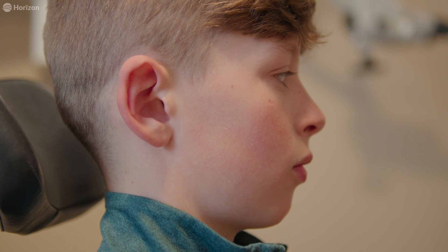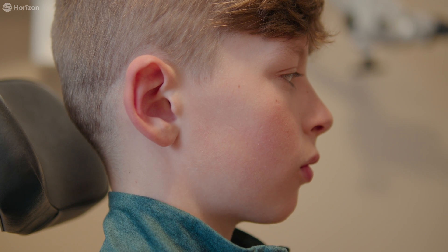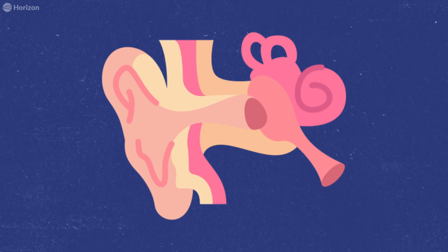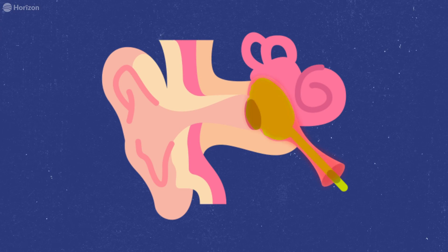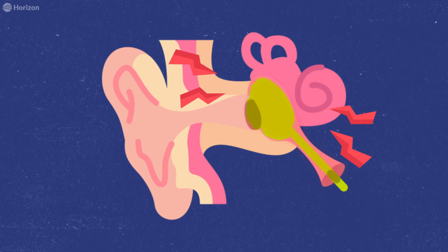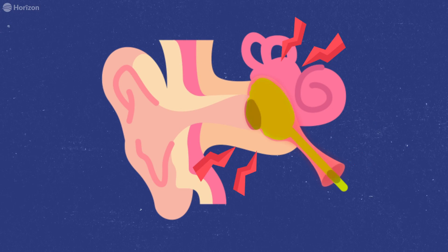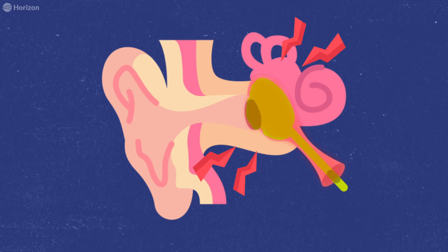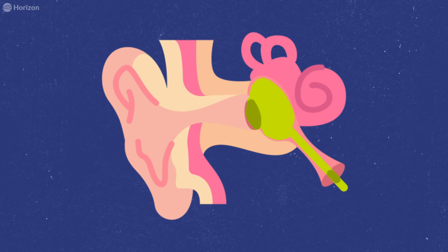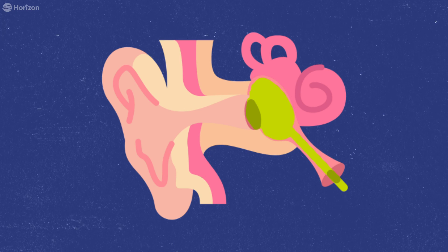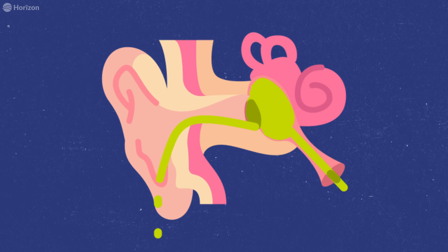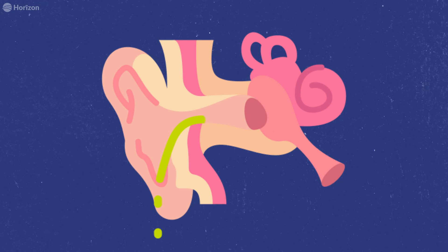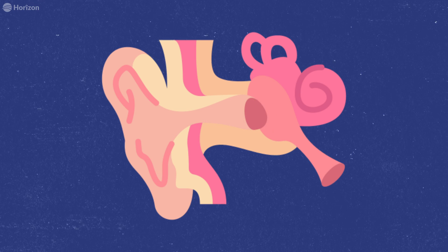An ear infection can last a very long time if left untreated. Typically an ear infection will build over 24 to 48 hours, and in extreme cases the pus will build to the point that the eardrum can even rupture, and then the pus starts to drain out of the ear canal.